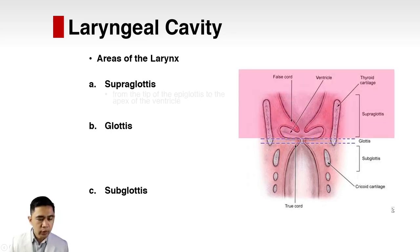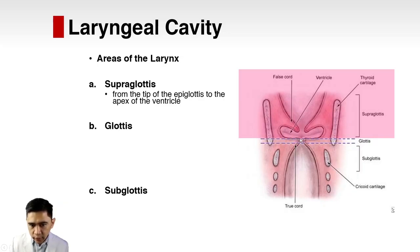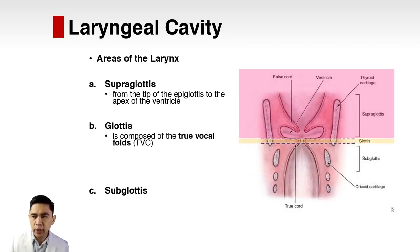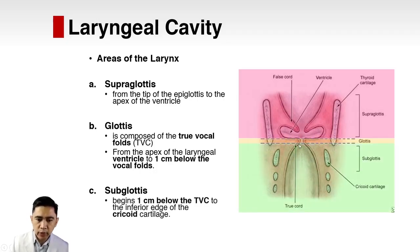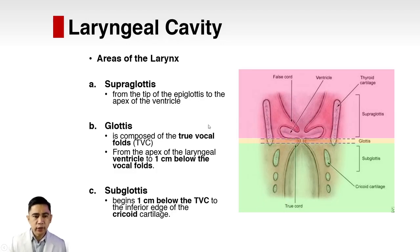The supraglottis extends from the epiglottis down to the apex of the laryngeal ventricle. The glottis is the area where the true vocal folds are found, from the apex of the laryngeal ventricle to one centimeter below the vocal fold. The subglottis begins one centimeter below the true vocal folds to the inferior edge of the cricoid cartilage. The laryngeal complex extends from the tip of the epiglottis to the inferior edge of the cricoid — it does not include the trachea or hyoid.